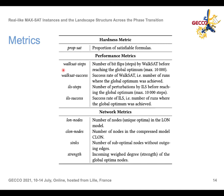The metrics used are: PropSat — the proportion of satisfiable formulas — and as performance metrics we use the performance of WalkSat, one of the best SAT solvers, and the ILS described earlier. For network metrics we count the number of nodes in the local optima network, the number of nodes in the compressed local optima network, the number of sinks — which are suboptimal nodes without outgoing edges — and the strength, which is the incoming weighted degree of the global optima.